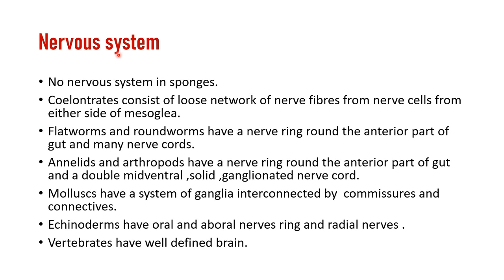Regarding the nervous system: there is no nervous system in sponges. In coelenterates, a loose network of nerve fibers forms from either side of the mesoglea. In flatworms and roundworms, there is a nerve ring at the anterior part of the gut and nerve cords. In annelids and arthropods, there is also a ring around the anterior gut plus a double mid-ventral solid ganglion nerve cord. In mollusks, a system of ganglia interconnected by commissures and connectives is present.